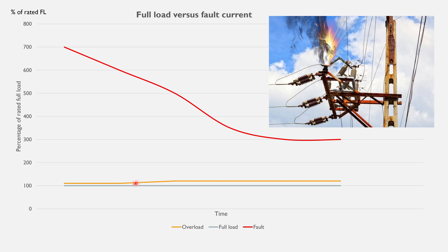If we look at fault current, we can see that it is significantly higher than the overload current or even the full load current. It can be three times higher than the full load, maybe four, five, six, seven, even eight or nine times higher than the full load current. So fault current is much higher than overload or full load current.